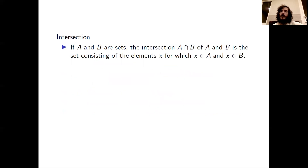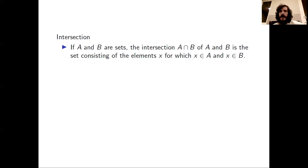Now we will look at intersections. If A and B are sets, the intersection A intersect B of A and B is the set which consists of elements X for which X is an element of A and X is an element of B. The difference between the intersection and the union is that we switched the 'or' to an 'and'.